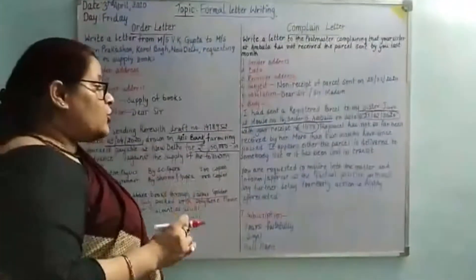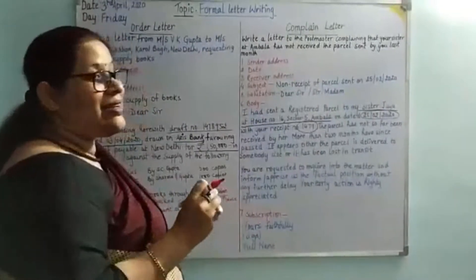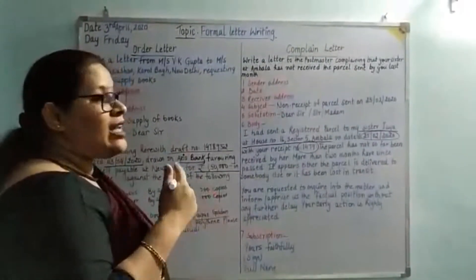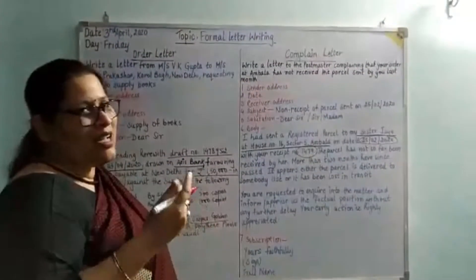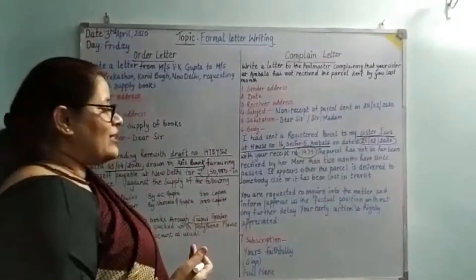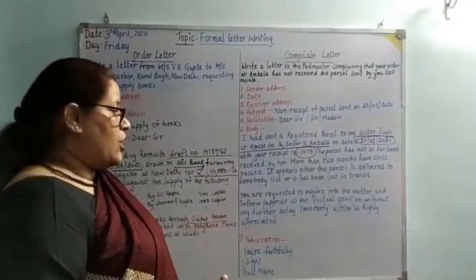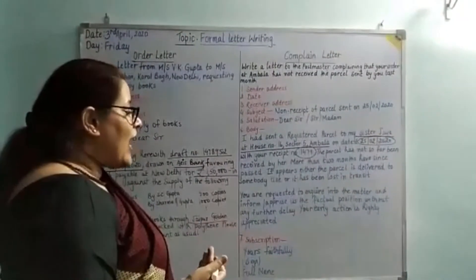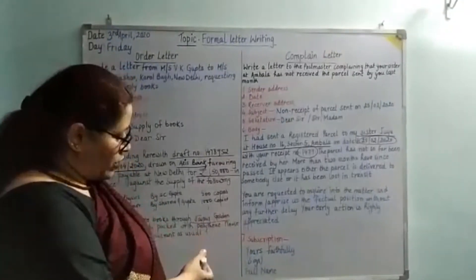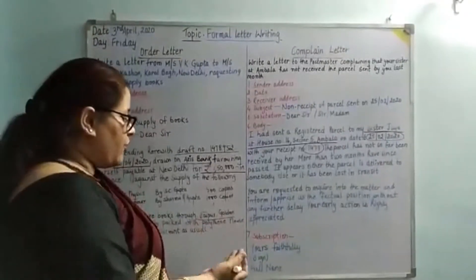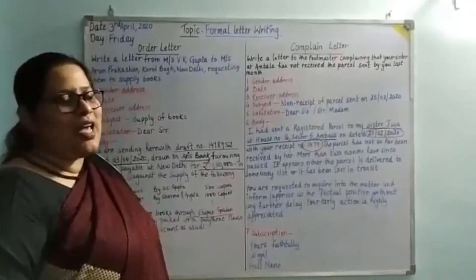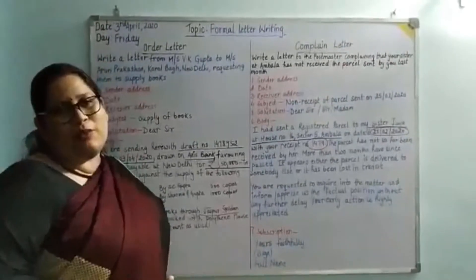The second paragraph says: you are requested to enquire in the matter and inform — or apprise, which also means to inform — us of the factual position without any further delay. Your early action is highly appreciated. This is followed by the subscription — 'Yours faithfully', then your signature and full name. Please make sure 'Yours' is written with a capital Y and without an apostrophe-S, and 'faithfully' begins with a small F. Your name's initials should begin with a capital letter.